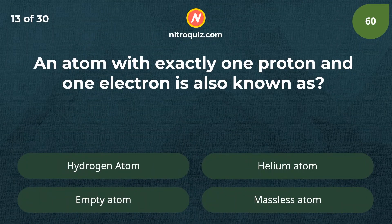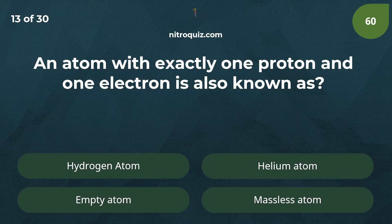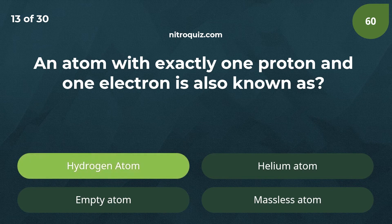An atom with exactly one proton and one electron is also known as? Answer is a hydrogen atom.